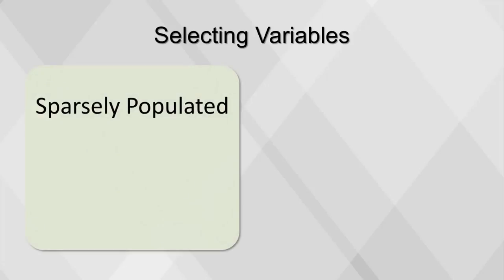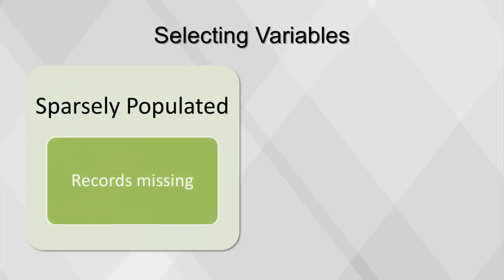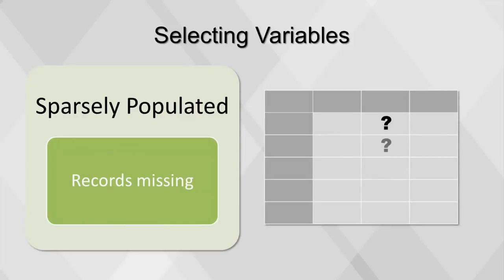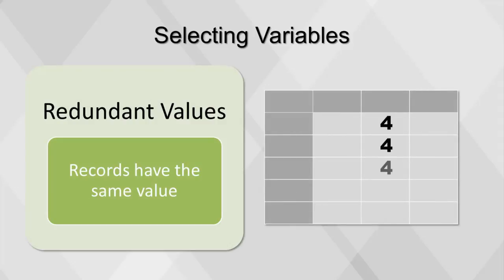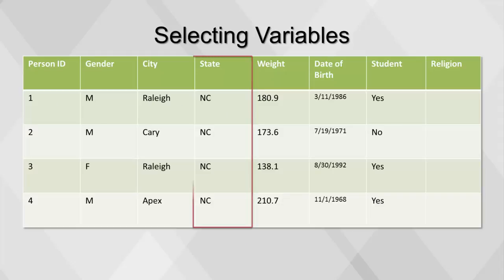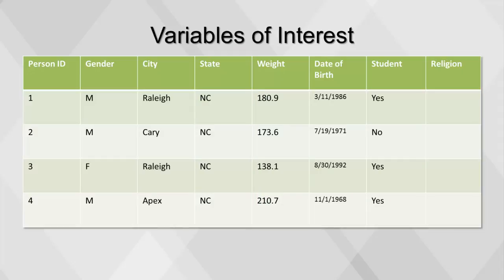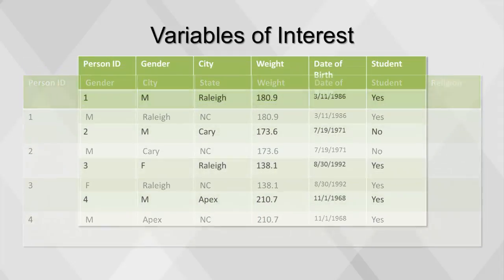Fields that are sparsely populated, meaning that a high percentage of records is missing, should not be selected. Fields with redundant values, meaning that a high percentage of records have the same value, should also not be selected. Techniques to identify these fields vary; for now, a visual inspection of the first few records can be used. From this table, we can remove the state column because all of its values are the same, and we can remove the religion column because it is sparsely populated. Our table now depicts only the variables of interest.